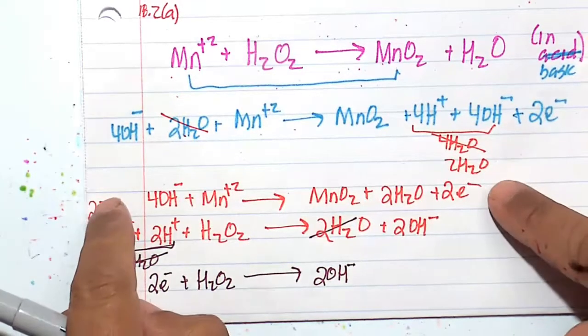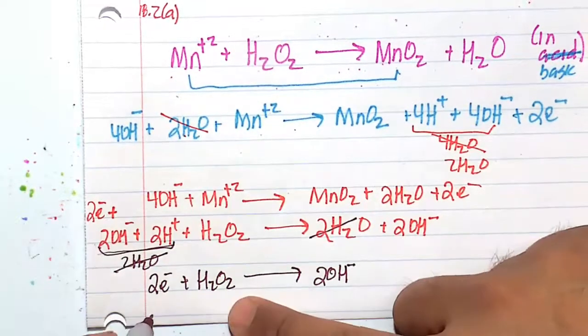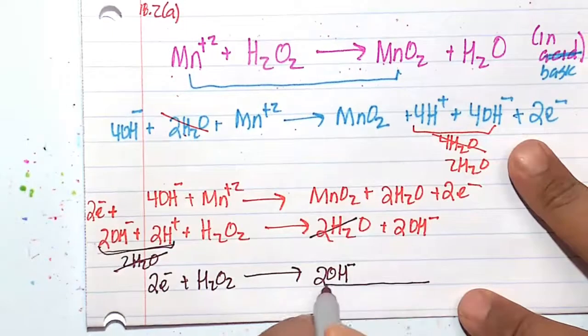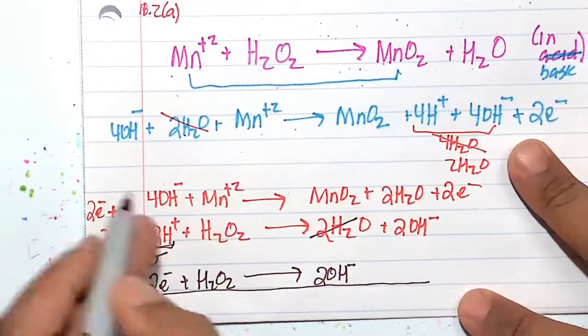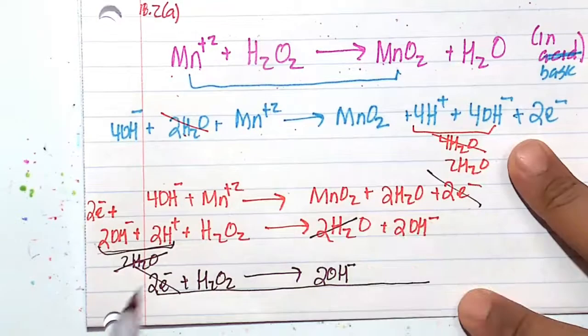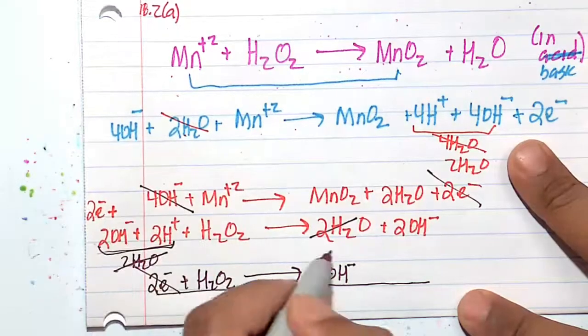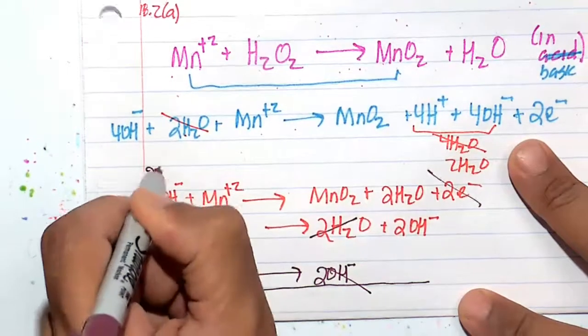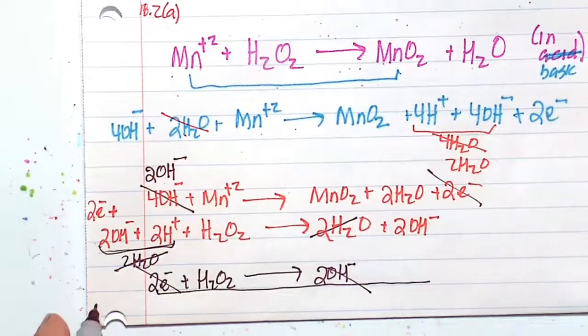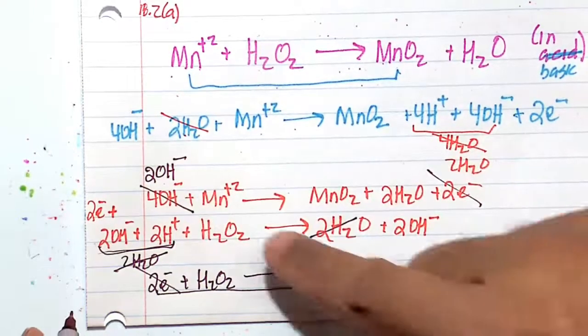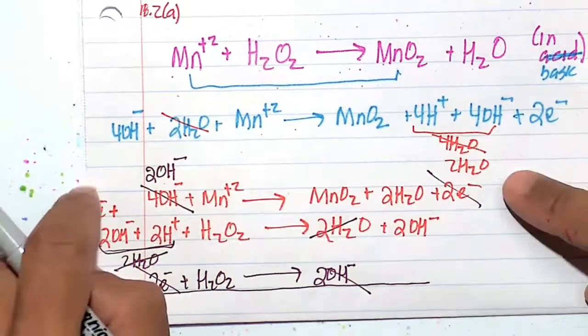And then let's rewrite this. Well, let's just add them up now instead of rewriting everything. So the 2e- and 2e- cancel. The 4OH-, two of them will cancel out with two of these, leaving me with 2OH- here. And I think we have everything that we need to balance this equation.